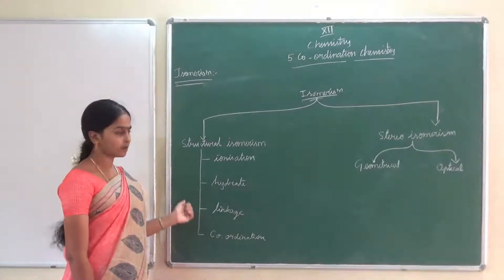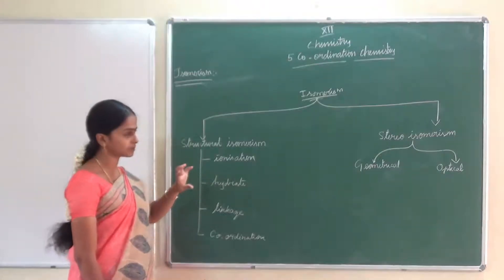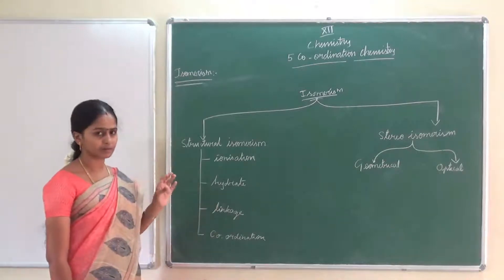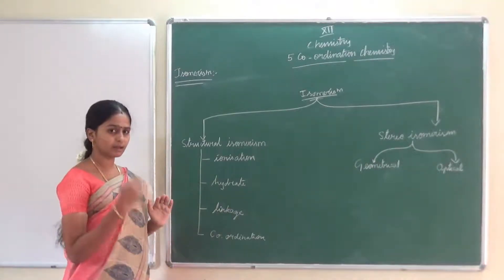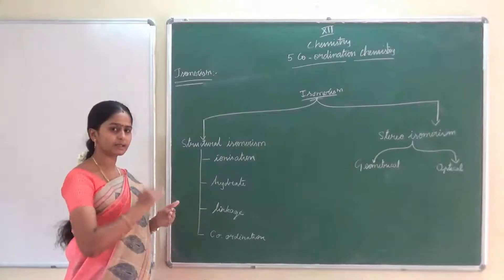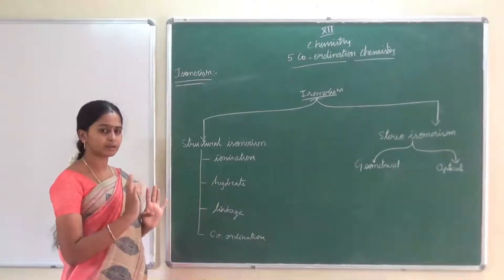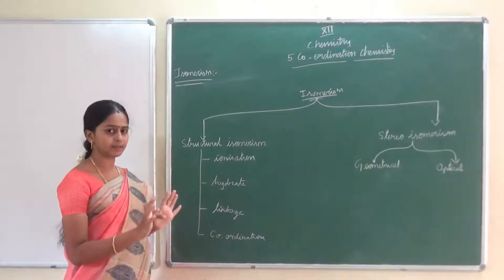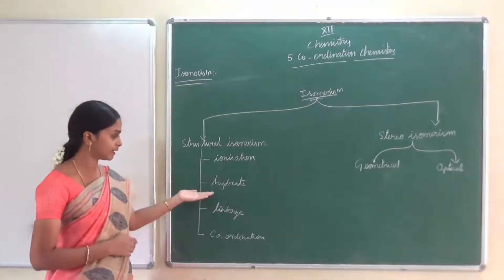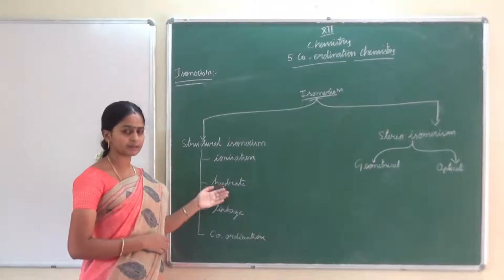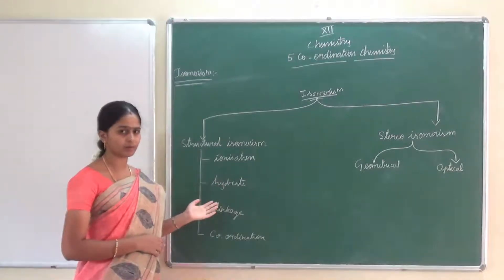These four types of isomerism are exhibited by coordination compounds due to the arrangement of ligands in different ways. In ionization isomerism, the counter ion can also act as a ligand — it replaces the ligand position and the original ligand goes out. In two compounds they will have the same molecular formula and same number of ligands, but the ions will differ. In hydrate isomerism, the number of water molecules present inside and outside the coordination sphere will differ, but both compounds will have the same total number of water molecules.